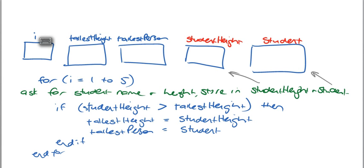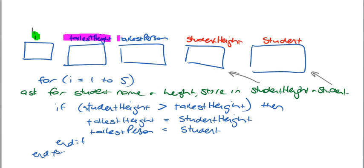I'm just going to walk it through like we did in class. We need to keep track of five variables. This one here will keep track of the loop. Tallest height and tallest person will be where we store the tallest person so far and the tallest height so far. Over here, we will keep track of the individual student that we're looking at now, that we're reading in at that moment.